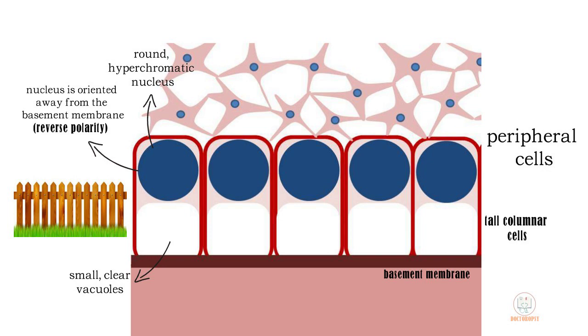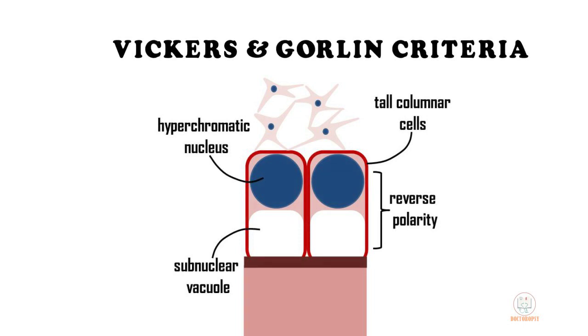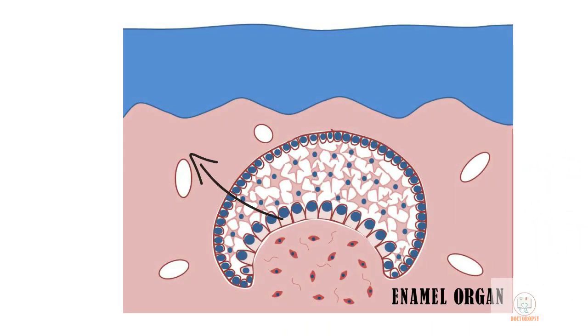Small clear vacuoles can be seen between the nucleus and the base membrane. These characteristic features of the peripheral cells are known as the Vickers and Golden criteria. These cells strongly resemble the preameloblasts or the inner enamel epithelium in the enamel organ of a developing tooth germ.